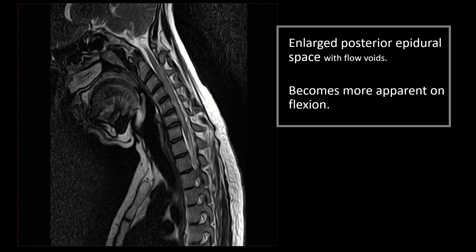Here is a plain T2 sagittal sequence which shows the enlarged epidural space posteriorly. There is effacement of the anterior epidural space and expansion of the posterior epidural space with some heterogeneity, which may be due to flow voids. There is also hyperintense signal in the cord, representing myelopathy due to compression on flexion.